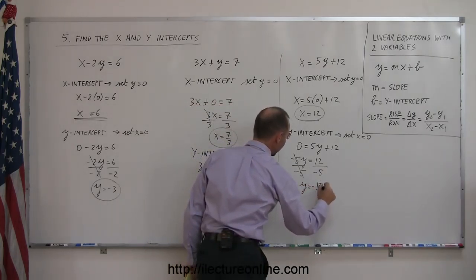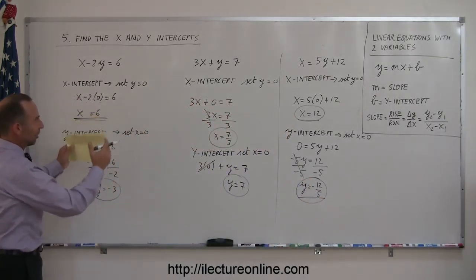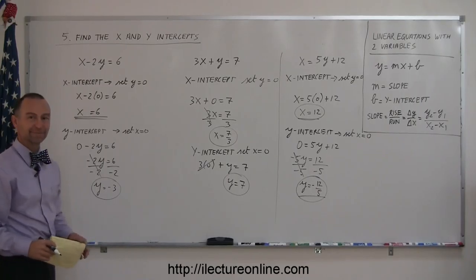Now to find the y-intercept, we set x equal to zero. Taking the original equation, we get 0 equals 5y plus 12. Moving the 5y across, we get minus 5y equals 12. Divide both sides by the numerical coefficient of y, and we have y equals negative 12 over 5. And there's the y-intercept. You can see that these are fairly simple problems if you just follow this technique. Hope you have fun with these — go try some on your homework.